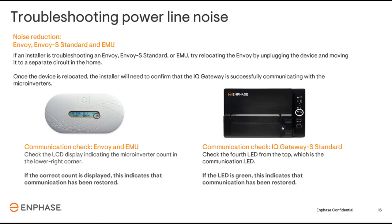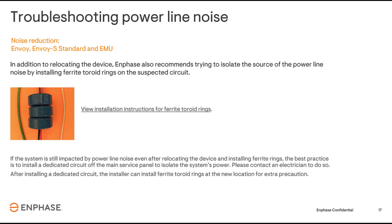For the Envoy S Standard, you can verify that the LED adjacent to the two arrows is green — if the light is green, all inverters are communicating. In addition to relocating the device, Enphase also recommends isolating the source of the power line noise by installing ferrite toroid rings on the suspected circuit. If the system is still impacted by power line noise even after relocating the device and installing ferrite rings, the best practice is to install a dedicated circuit off the main service panel to isolate the system's power. Please contact an electrician to do so. After installing a dedicated circuit, the installer can also install ferrite toroid rings at the new location as an extra precaution.